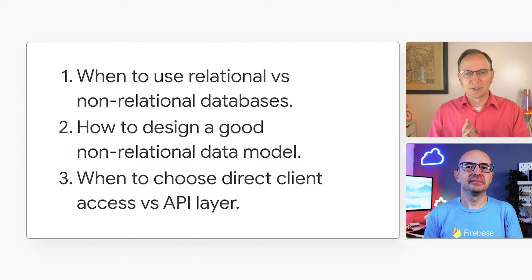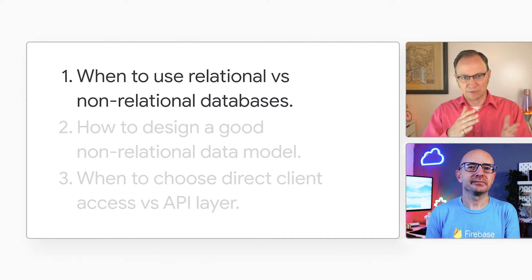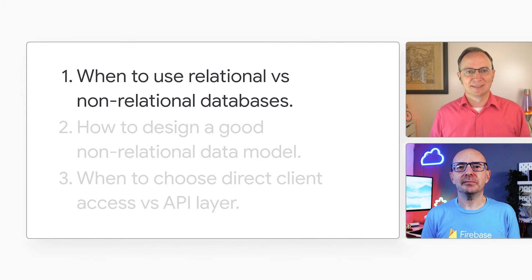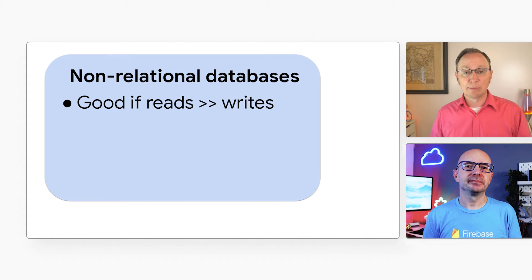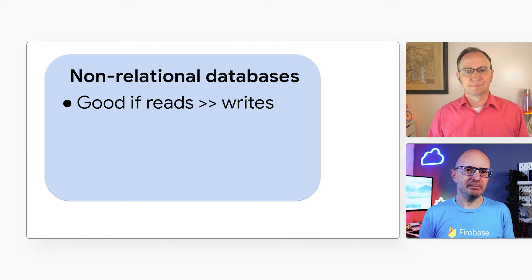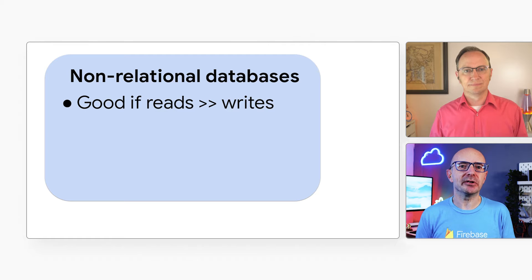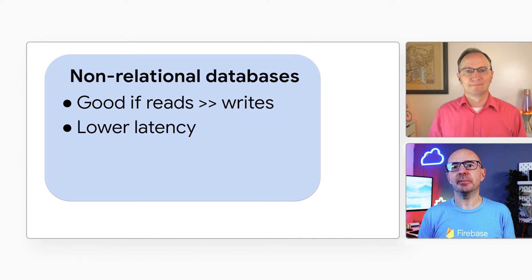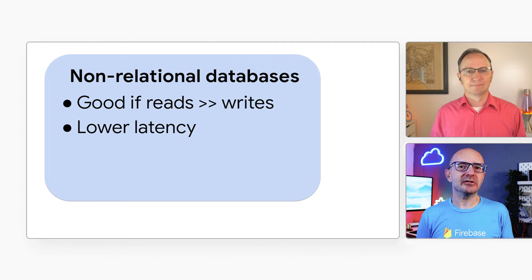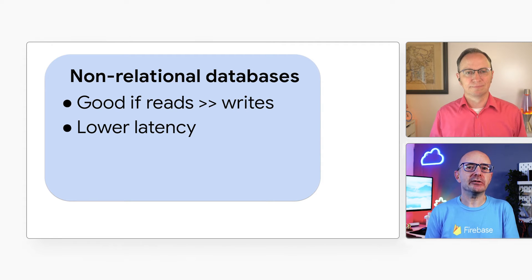Excellent. Let's dig into each of those. The first decision is when to use relational versus non-relational databases. My rule of thumb is use a non-relational database when the number of reads is much greater than the number of writes. A consumer-facing user interface may be a good example — in many web apps and mobile apps, there can be hundreds or even thousands of times more reads than writes. If most database operations are read operations, a non-relational database can be faster and cheaper. The data is denormalized, which means no complex joins. Those joins between tables can lead to slow performance and increased cost in regular relational databases.